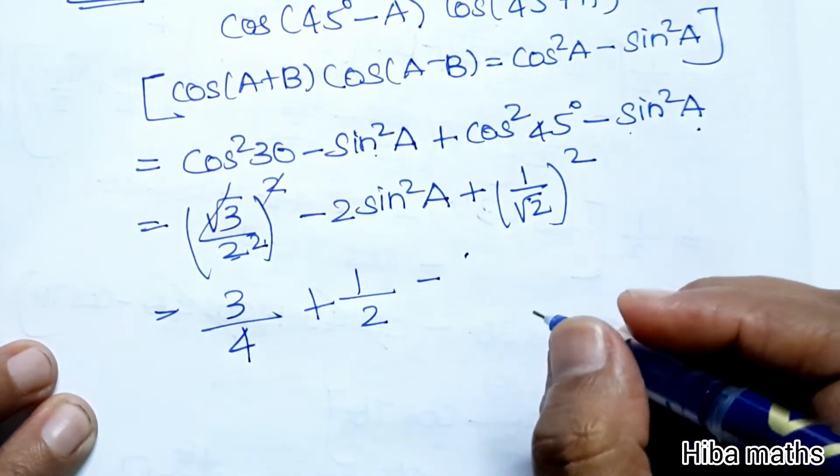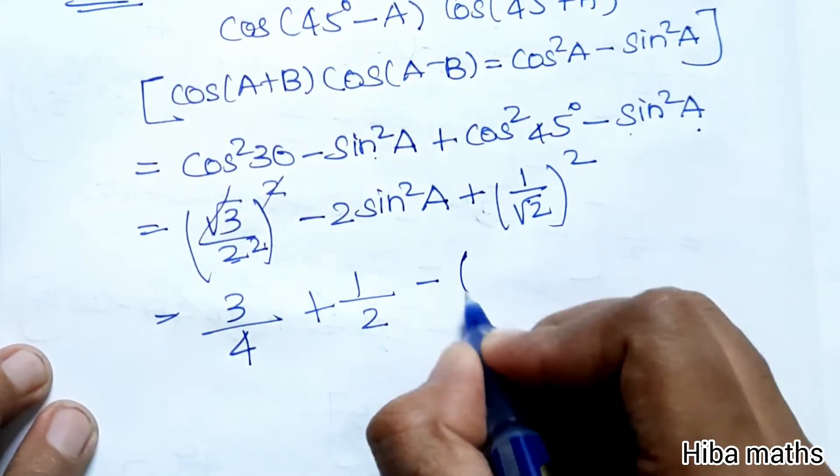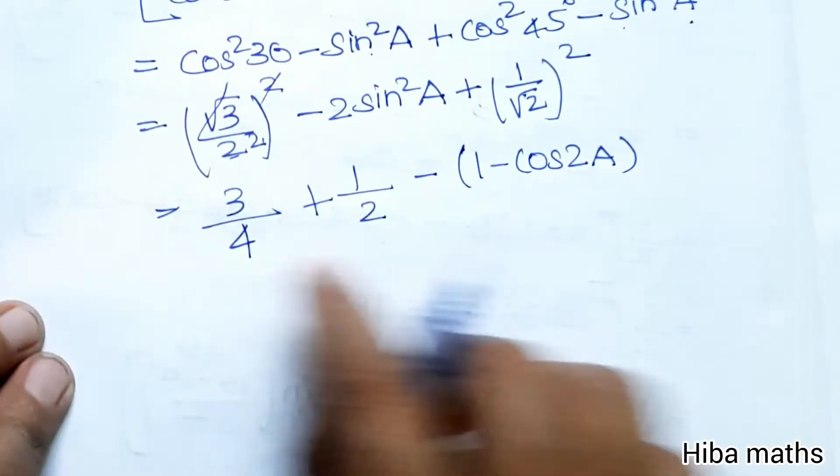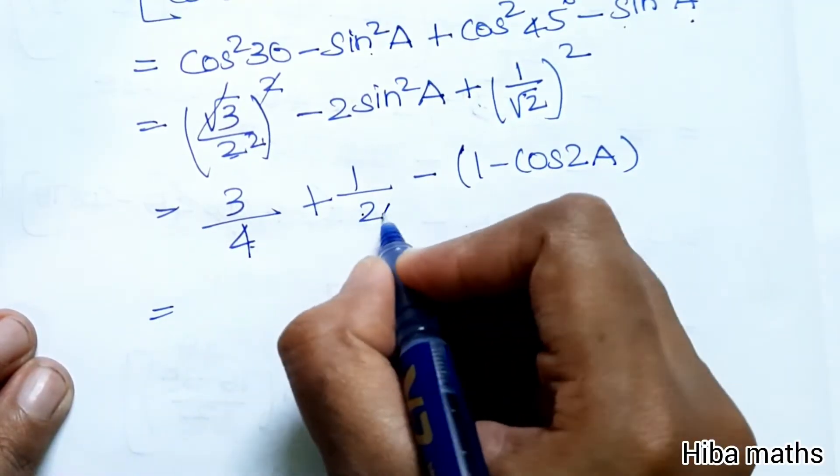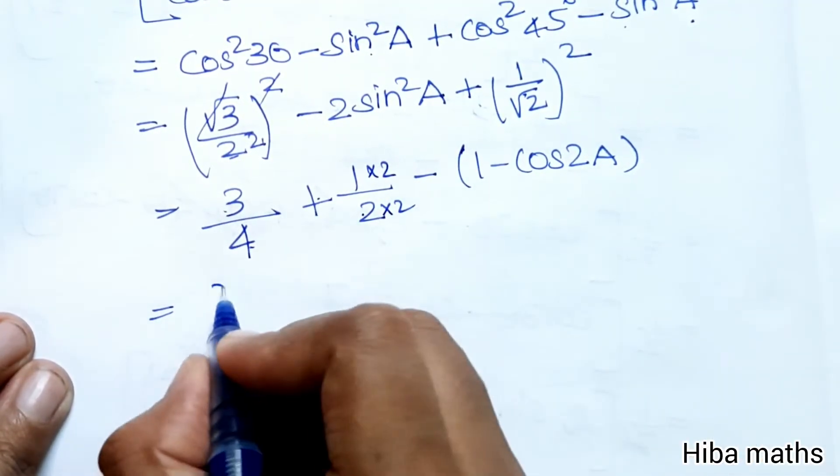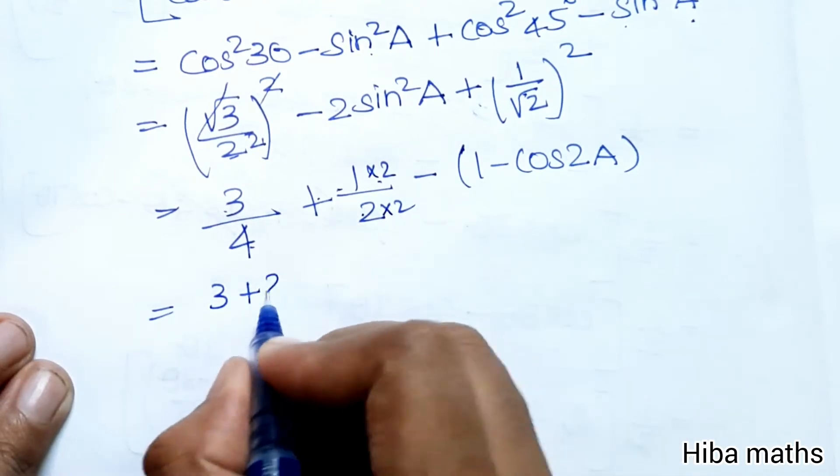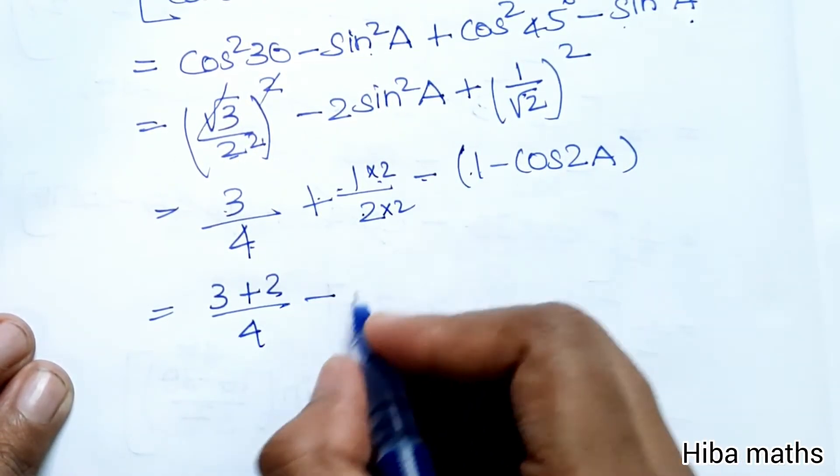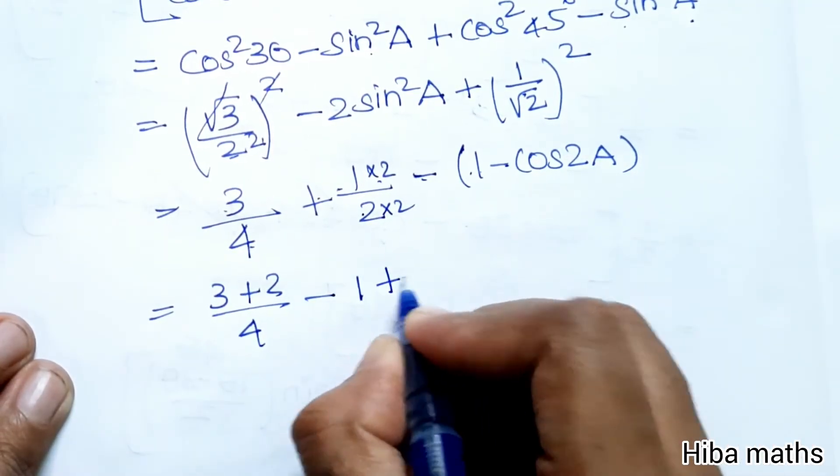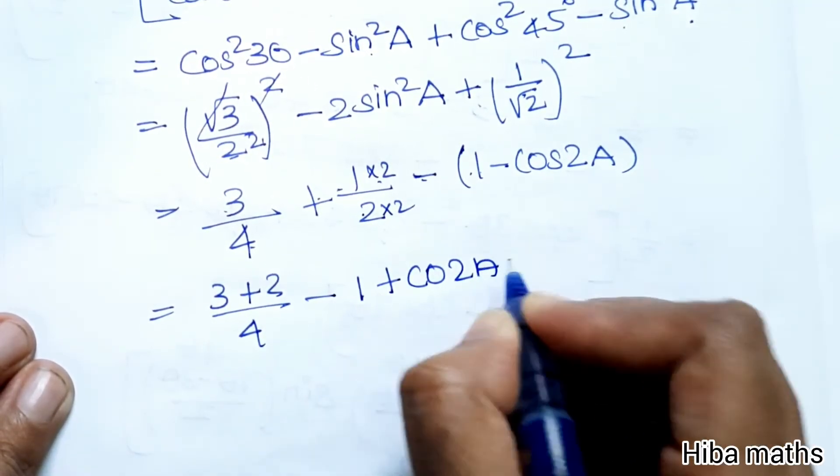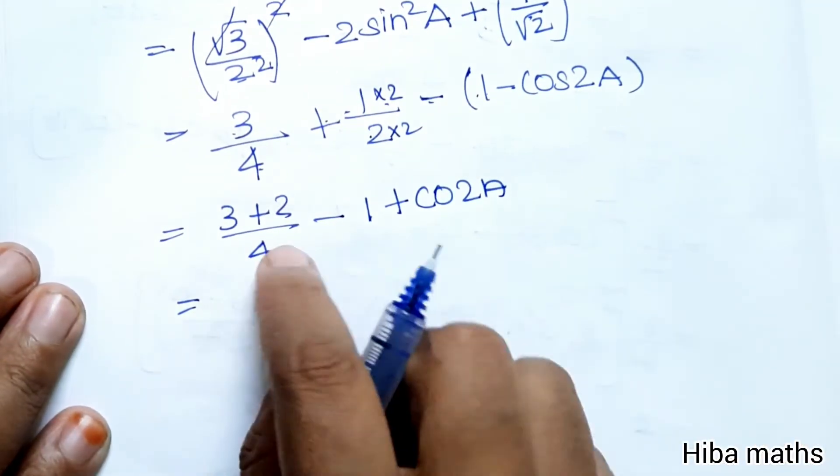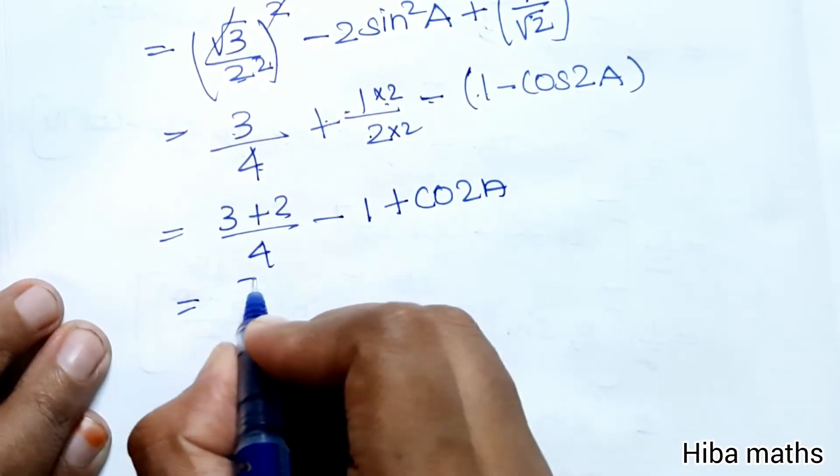Using the identity 2sin²A = 1 - cos(2A), we can substitute. Simplifying: 3/4 + 2/4 - (1 - cos2A). Taking LCM as 4: (3 + 2)/4 - 1 + cos(2A) = 5/4 - 1 + cos(2A).